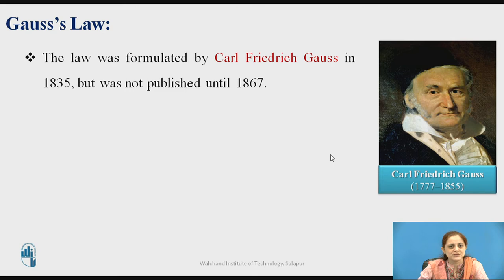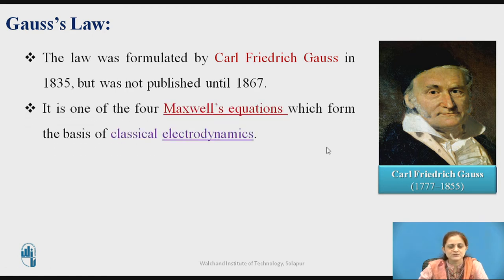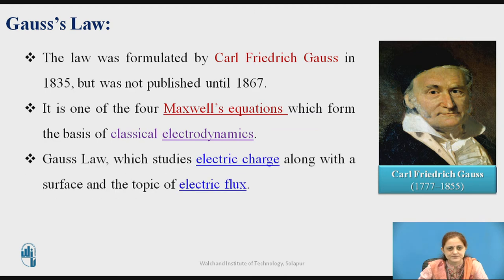The Gauss law was formulated by Karl Friedrich Gauss in 1835, but was not published until 1867. It is one of the four Maxwell's equations which is in the form of classical electrodynamics. Gauss law studies the electric charge along with the surface and the topic of electric flux. There are different Maxwell's equations defined, and one of the important equations considered amongst them is the Gauss law.